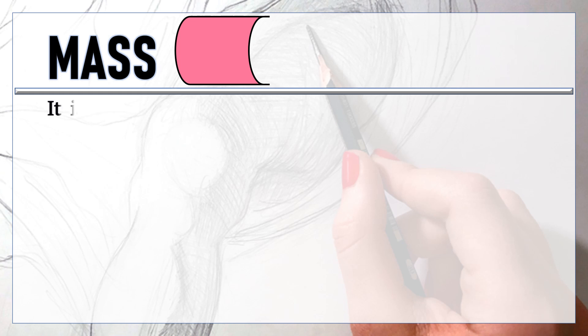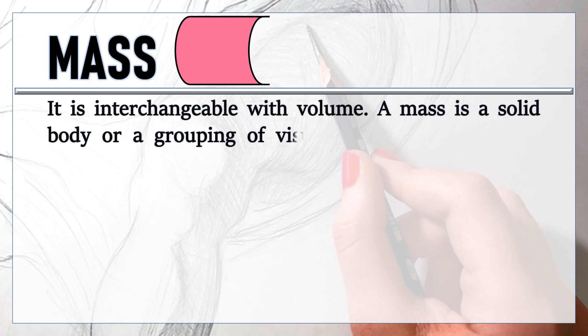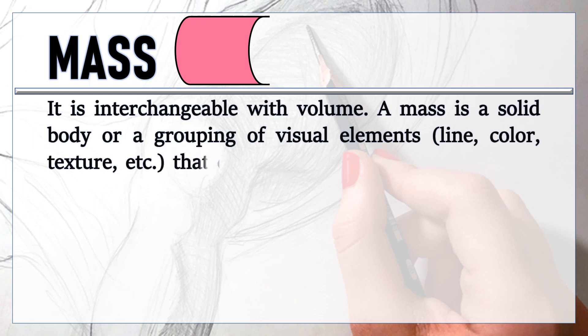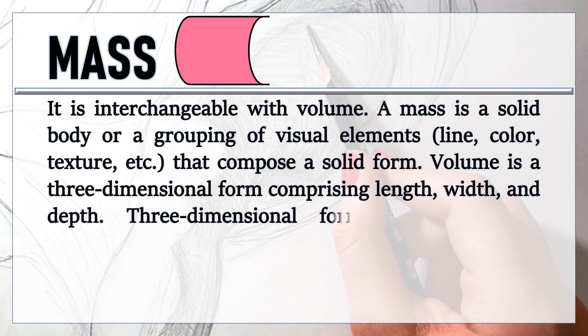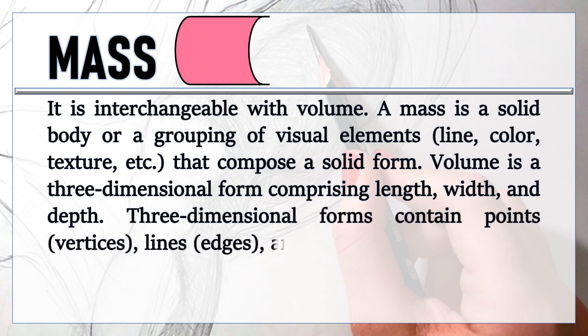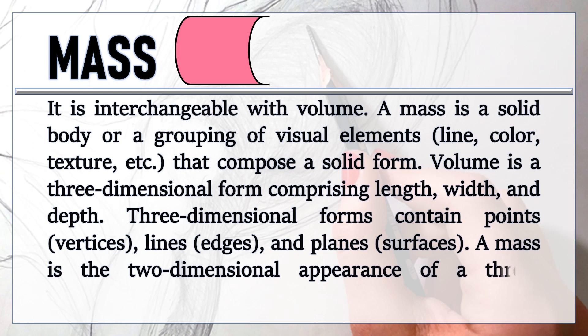Next is mass, which is interchangeable with volume. A mass is a solid body or a grouping of visual elements that compose a solid form. Volume is a three-dimensional form comprising length, width, and depth. Three-dimensional forms contain points, vertices, lines, edges, and planes. A mass is the two-dimensional appearance of a three-dimensional form.